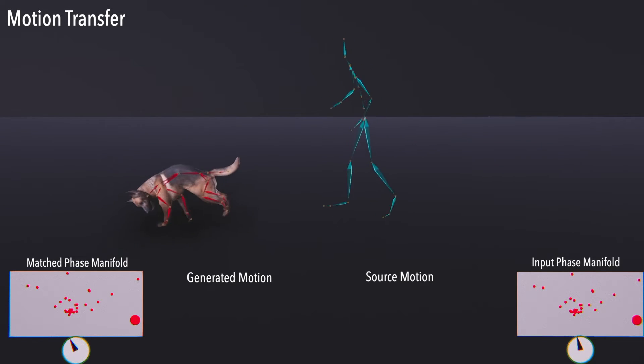Using our phase-guided motion matching on the learned phase manifold, we are able to drive one character with another drastically different character, even though the alignment between the two characters might be non-trivial or not well-defined.